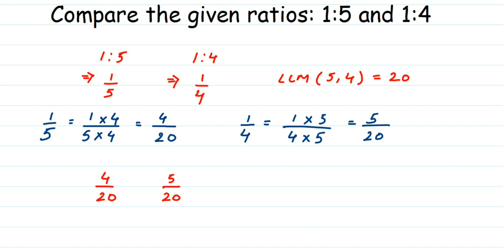As I mentioned, this method has 2 to 3 extra steps compared to the previous one. Now just compare the numerators: 5 is greater than 4, so 5/20 is greater than 4/20. Since 4/20 equals 1/5 and 5/20 equals 1/4, we get 1/4 is greater than 1/5. In ratio form: 1 is to 4 is greater than 1 is to 5. I hope you understood how to compare ratios. Drop a comment if you have any questions — thank you so much for watching.